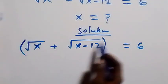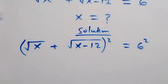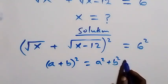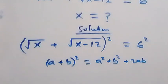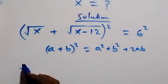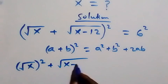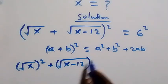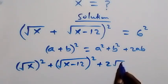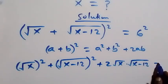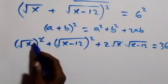We have everything squared on both sides, following the expansion of (a plus b) squared, which equals a squared plus b squared plus 2ab. That is, root x squared plus root of (x minus 12) squared, plus 2 times root x times root of (x minus 12), equals 6 squared, which is 36.